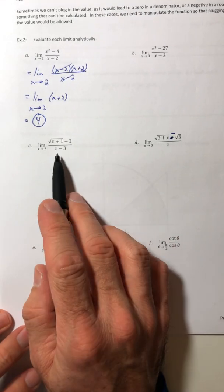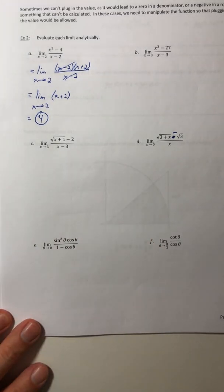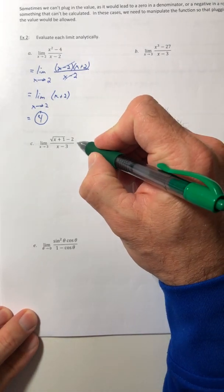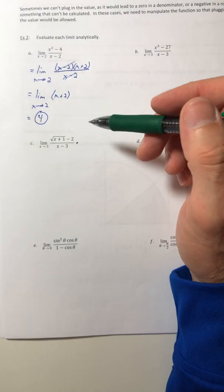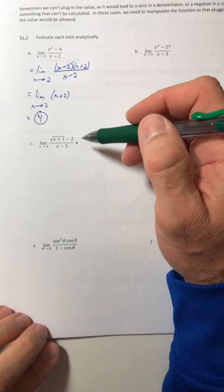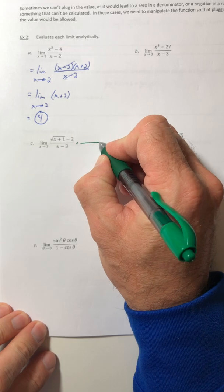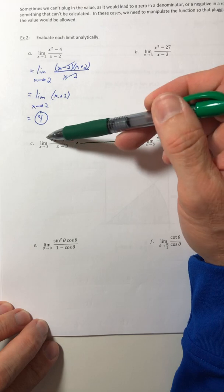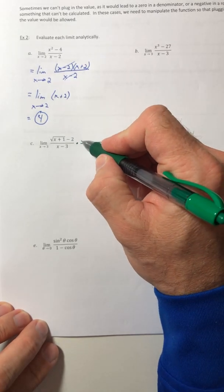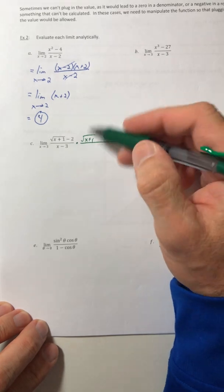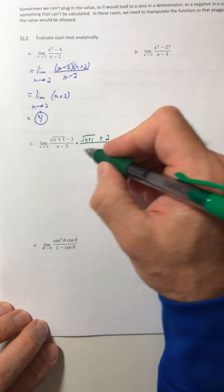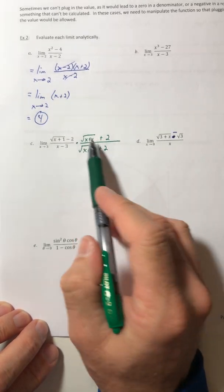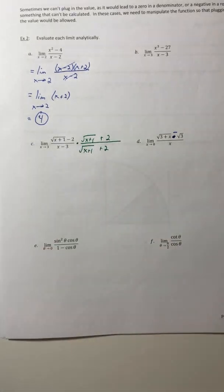So for the ones that involve a square root like this on the top, we are going to use a technique from algebra two or math 120, intermediate algebra. And we're going to use the conjugate and we're going to multiply it to the top and the bottom. I'm going to use the conjugate that has the square root in it. So root X plus one plus two, and I'm going to also multiply it to the denominator. Because if I multiply something to the top, I have to multiply the same thing underneath.